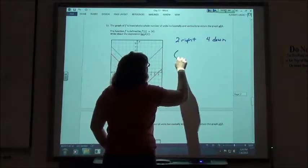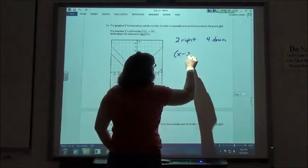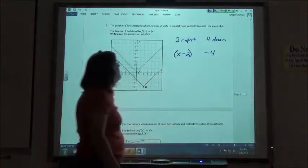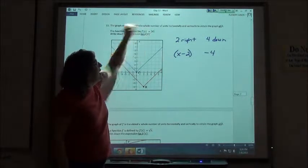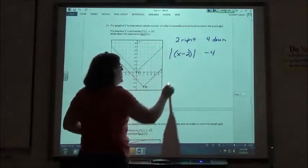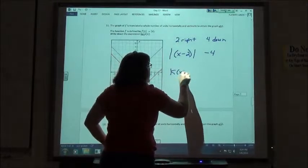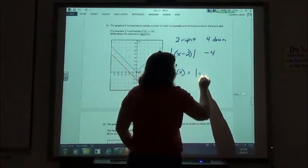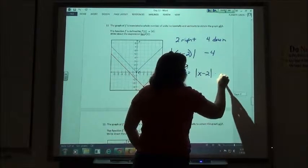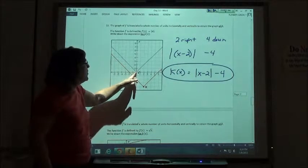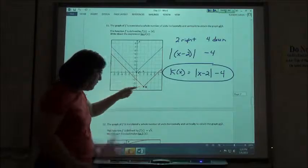So if I'm going to go 2 to the right, I'm going to do x minus 2. If I'm going to go 4 down, I'm going to have a minus 4. But in this case, my x has the absolute values around it. So if I'm going to do k of x, I really don't need the parentheses since I have the absolute value. I'm going to have x minus 2 minus 4. And that would translate my graph 2 to the right, down 4.